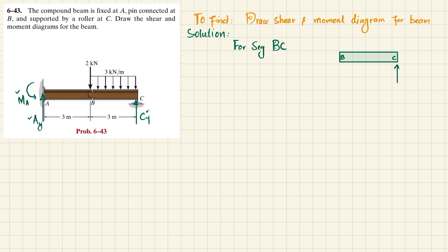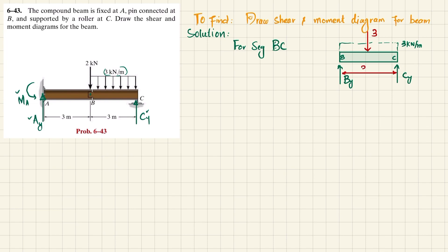For segment BC: at C we have reaction force C_Y, and at B, when you remove the pin support, there is a reaction force B_Y. You can see there is a load of 3 kN/m over the length of 3 meters. Converting this distributed load to a point load: 3 × 3 = 9 kN.